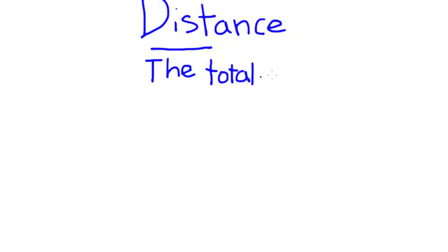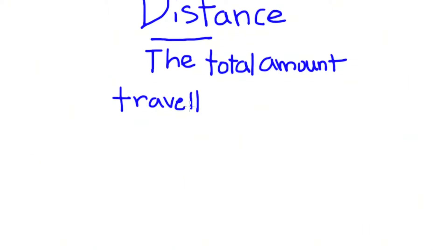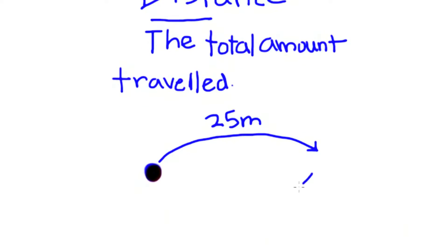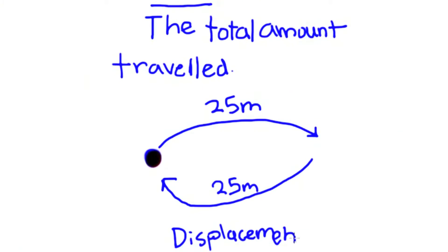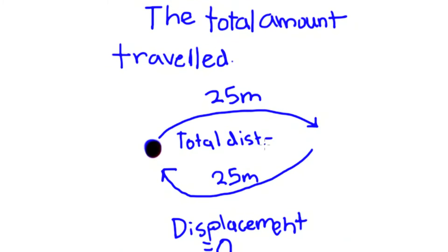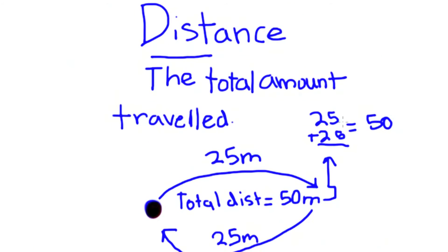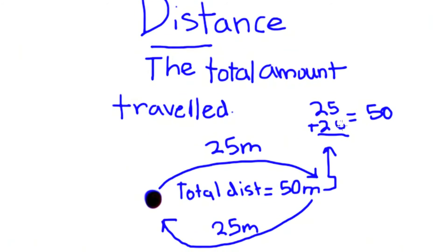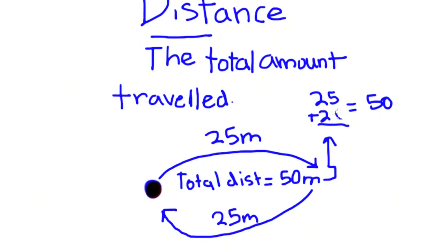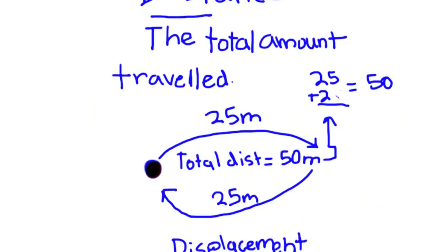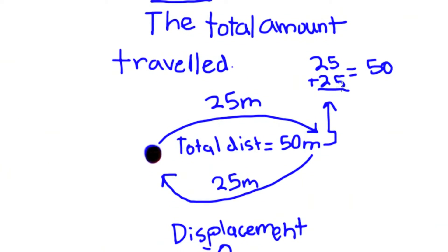Distance is basically the total amount of meters or units, or just the total amount traveled by the ball in cricket's case. Let's say a ball traveled 25 meters and then traveled back 25 meters to its origin point. It would be displaced zero meters because it would be at its origin, but the total distance traveled would be 50 meters, because 25 plus 25 equals 50, even though it's back at its origin and the displacement is zero.